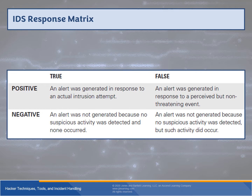Here's an IDS response matrix. A true positive is where an alert was generated because an actual intrusion attempt occurred — that's what we want. A false positive was a perceived but non-threatening event; be careful with dismissing these, as they can be used to desensitize the system so it misses a true positive later. A proper negative means no alert was generated because no suspicious activity occurred — no news is good news. A false negative is very bad: no alert was generated but suspicious activity did occur — this is a miss.